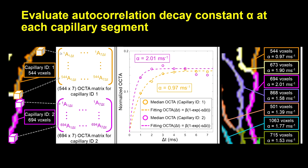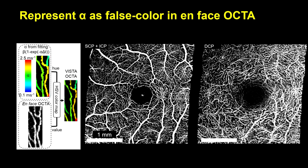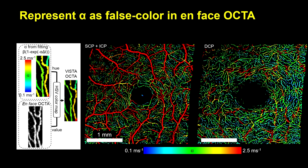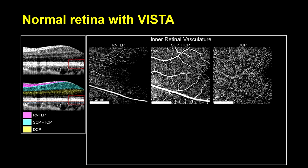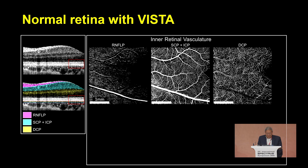This assigns a flow speed to each capillary segment, which can be represented in a false color image superimposed on the standard OCT angiogram. Using this technique, we can also resolve variations from the cardiac cycle — cardiac pulsatility — which can be at least partially compensated.